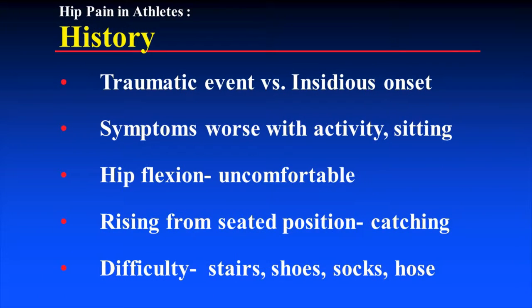Some history: is it traumatic or insidious? Some traumatic cases, particularly symptomatic FAI patients, are athletes — classically a football player who goes up for a catch, gets hit, falls down, has a split-type landing and injures his hip. I've seen that result in labral tears, chondral defects, subluxations, and dislocations of the hip that need to be reduced. All of those are traumatic — younger patients.